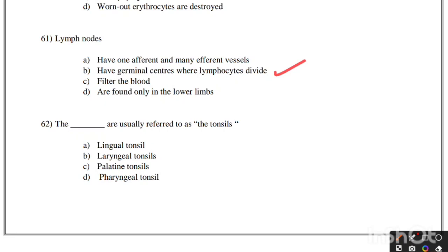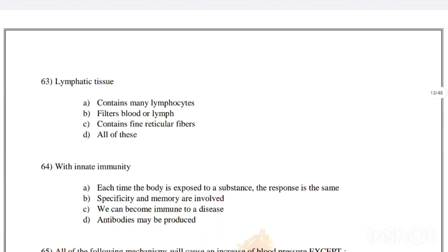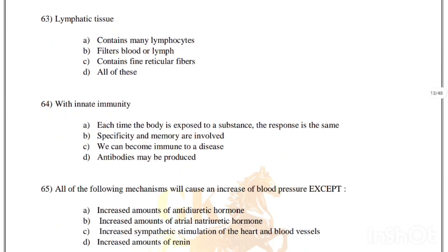The dash are usually referred to as tonsils: lingual tonsils, laryngeal tonsils, palatine tonsils, or pharyngeal tonsils. Correct answer is option C, palatine tonsils. Lymphatic tissue contains many lymphocytes, filters blood or lymph, contains fine reticular fibers — correct answer is option D, all of these.